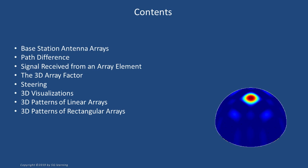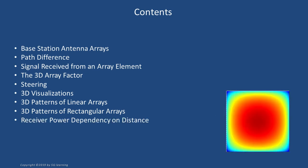We will observe that rectangular arrays provide additional freedom to steer the electromagnetic field on the desired target. In the final section, we will compute the distribution of received power in the vicinity of a 5G mobile station.